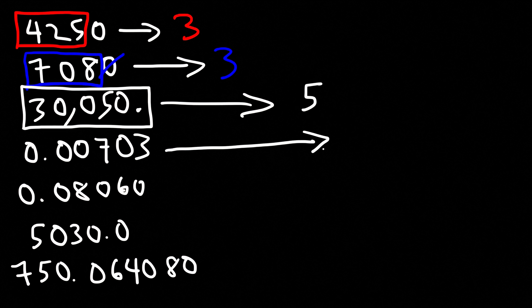For .00703, we do have a decimal point, but there are no trailing zeros. The leading zeros will not be counted. So only three digits are counted, giving three significant figures.